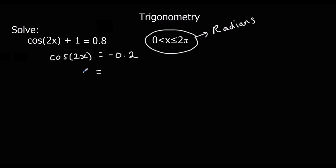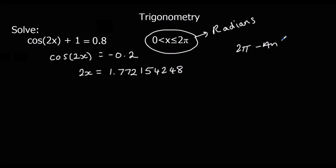Now we can do shift cos of -0.2, and we get the first answer. We'll write down the full value since we're not done with it yet: 2x = 1.772154248. Since we're working with cos, the second answer is 2 pi minus the first answer: 2 pi minus 1.772154248 gives us 4.51103106.